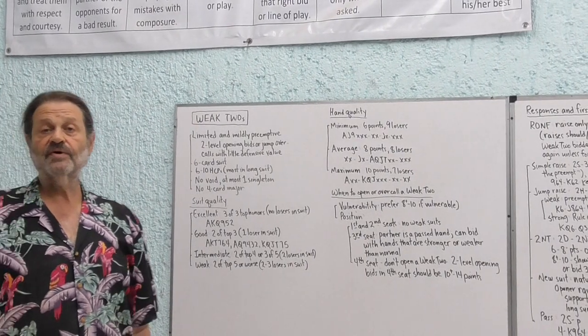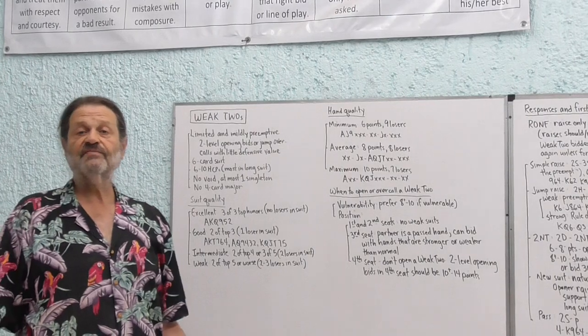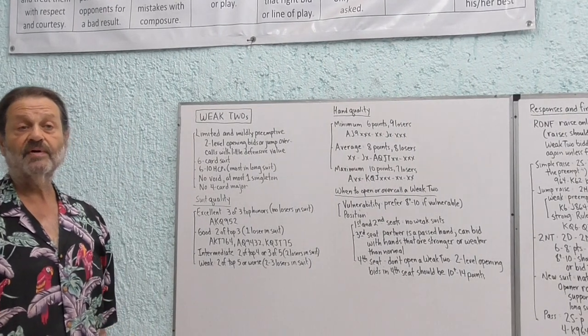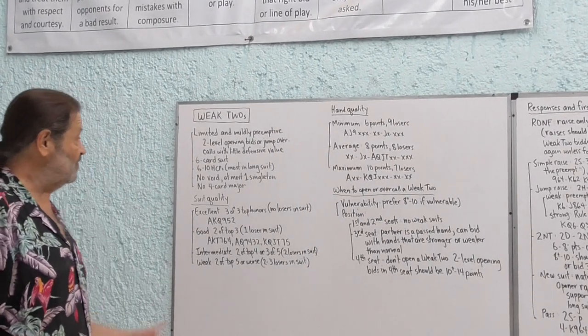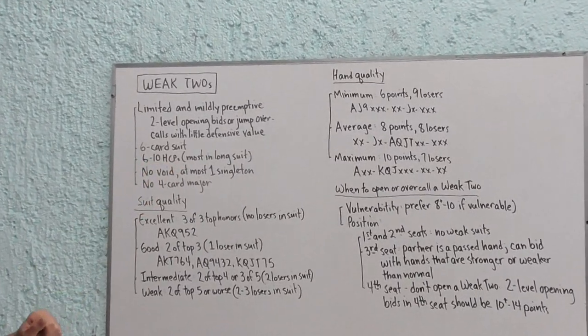You also should not make the weak two bid with a void and you shouldn't have more than one singleton, and we're advised not to do this with a four card major. But Larry Cohen will break both of these rules.